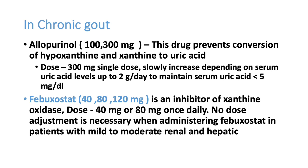Allopurinol can be started at 100 mg three times daily with dose titration, but some patients can develop skin rashes and there are drug interactions with antibiotics like amoxicillin and clavulanic acid. It should not be used in renal failure. Febuxostat has a better side effect profile — it can be started at 80 mg twice daily, then reduced to 40 mg as a preventive dose, though some patients may require 80 mg.